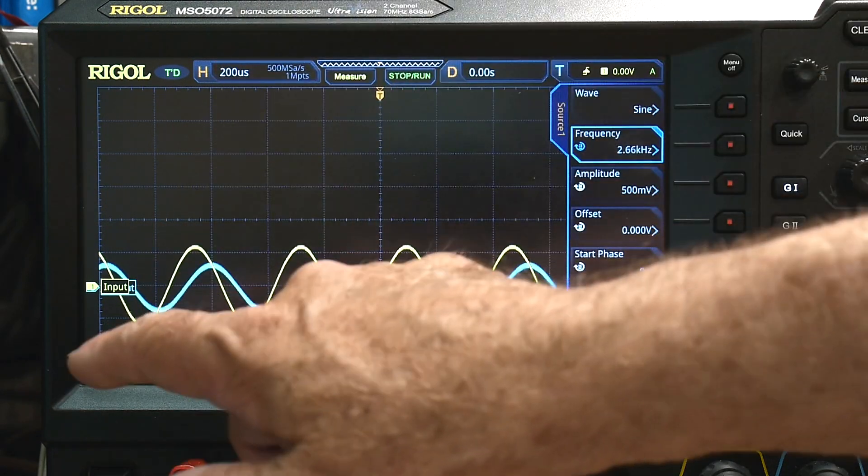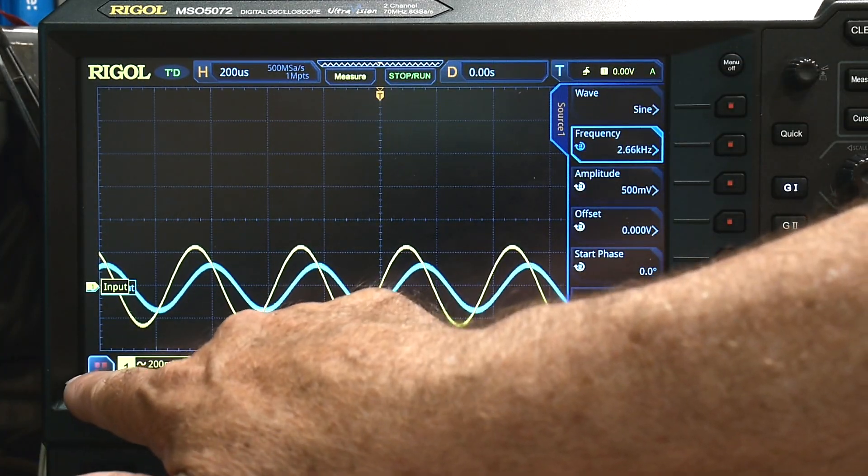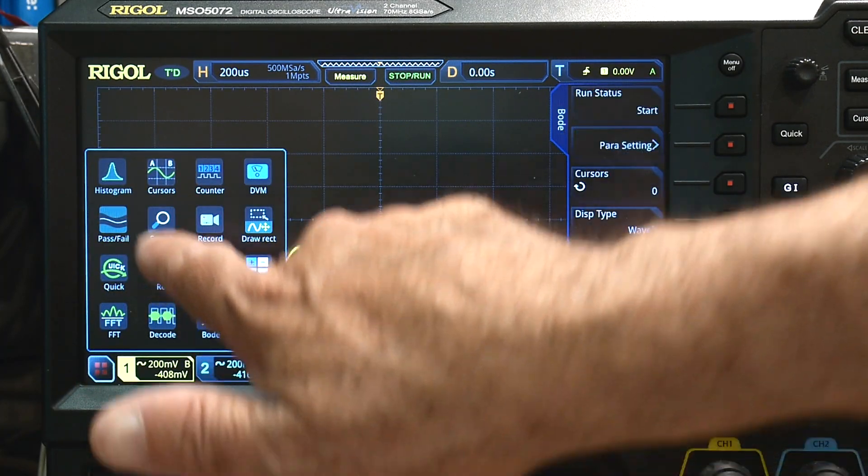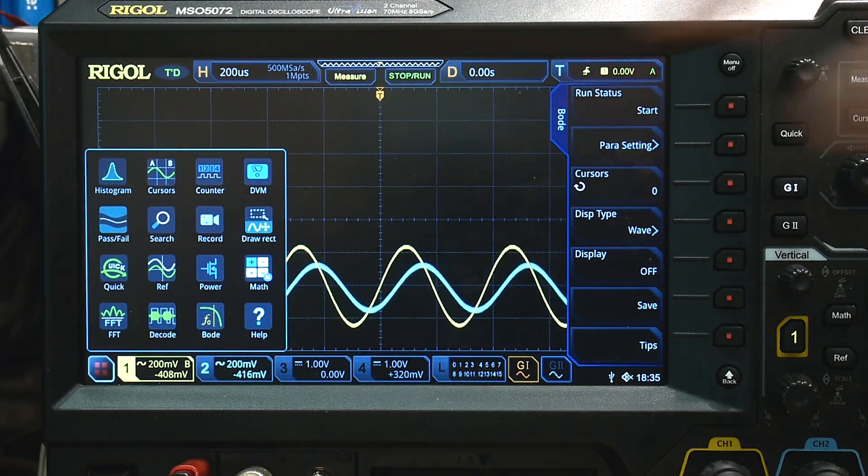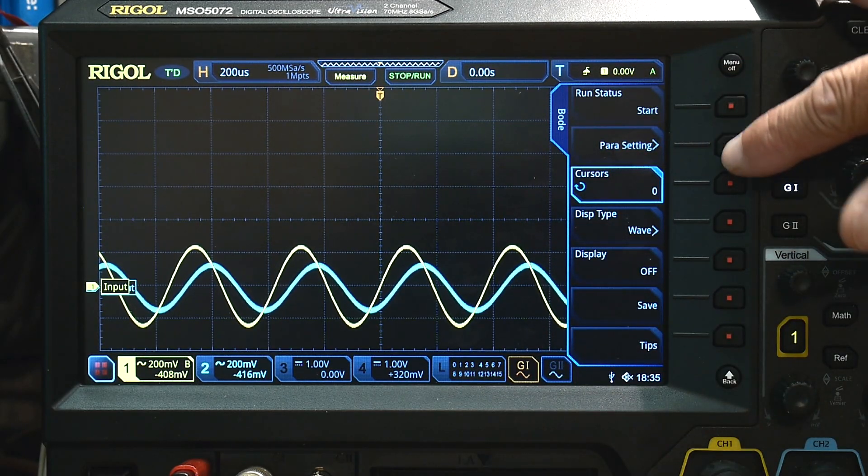All right, so this scope, a lot of the new digital scopes have this feature, even some of the real inexpensive scopes. We're going to say a Bode plot. And it's going to come up here, and it's going to say, what are the parameters?